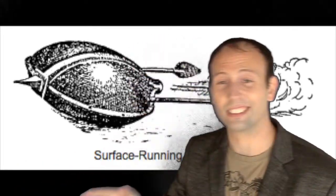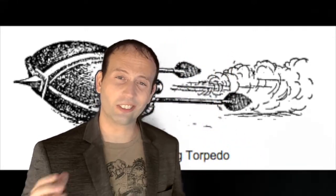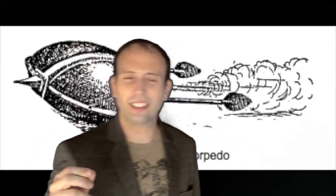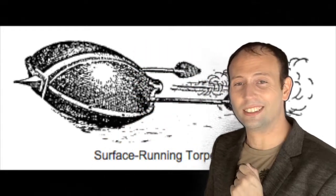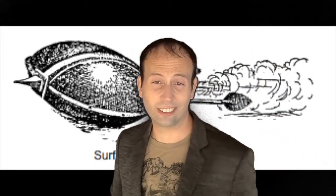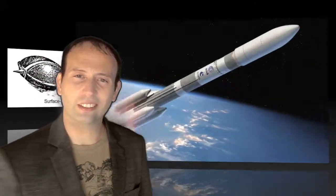By the 16th century, rockets fell into a time of disuse as weapons of war, though they were still used for fireworks displays. A German fireworks maker, Johann Schmidlap, invented a step-rocket, a multi-staged vehicle for lifting fireworks to higher altitudes.